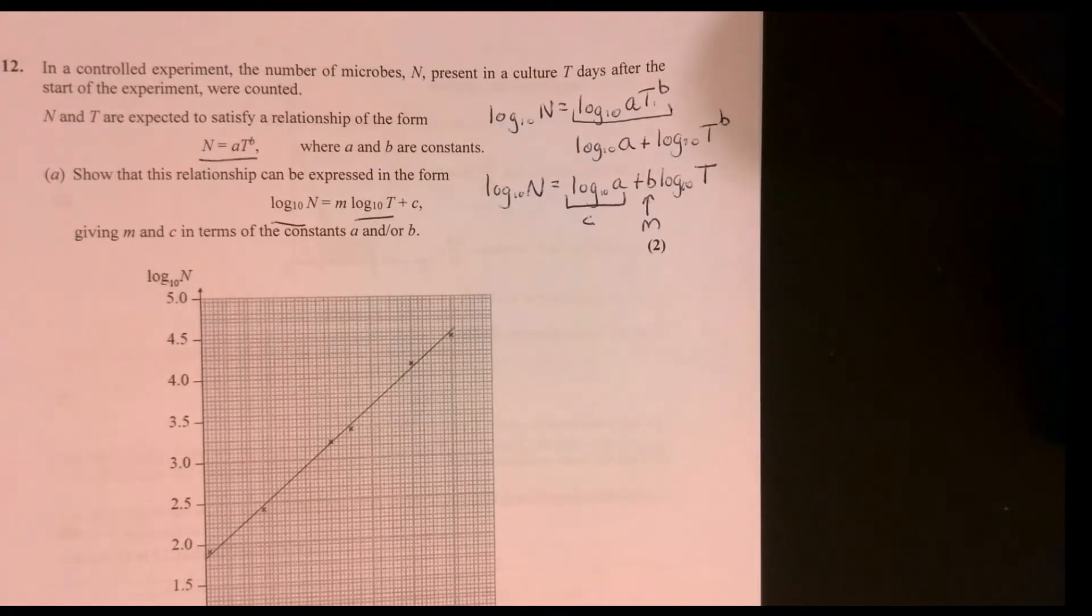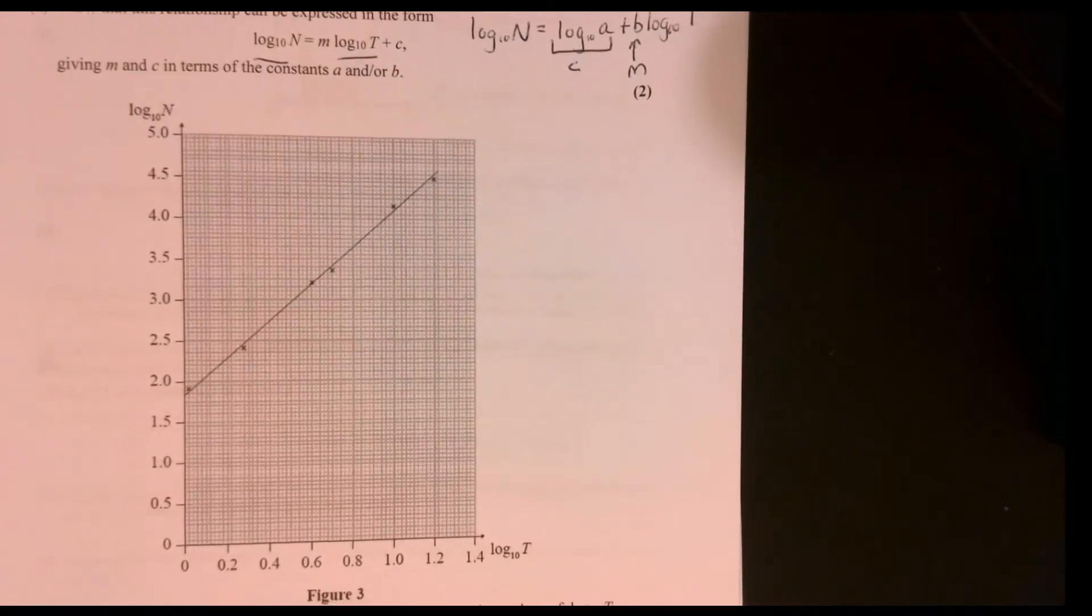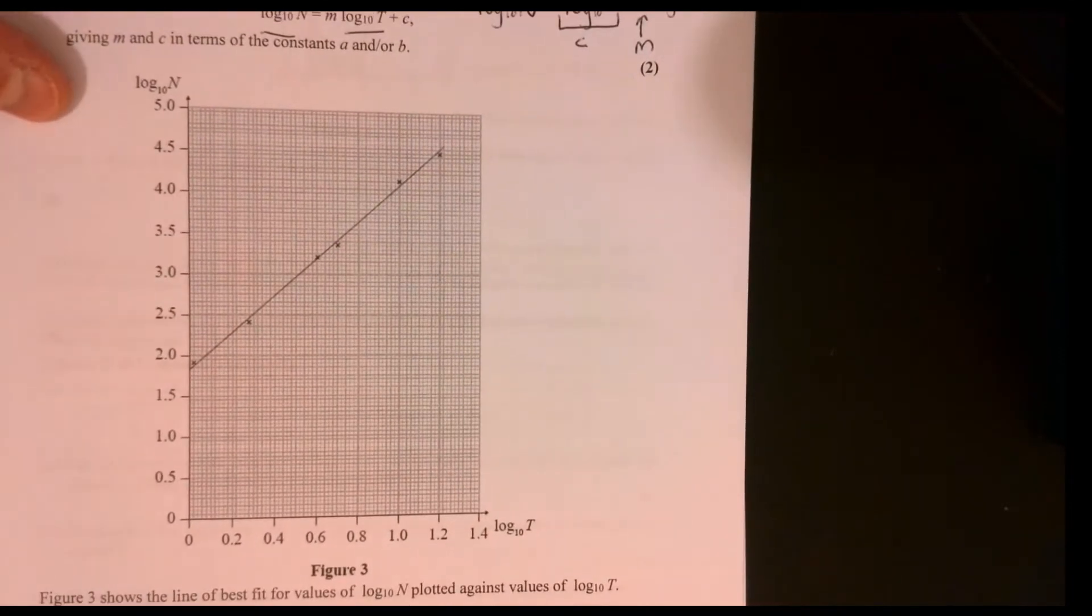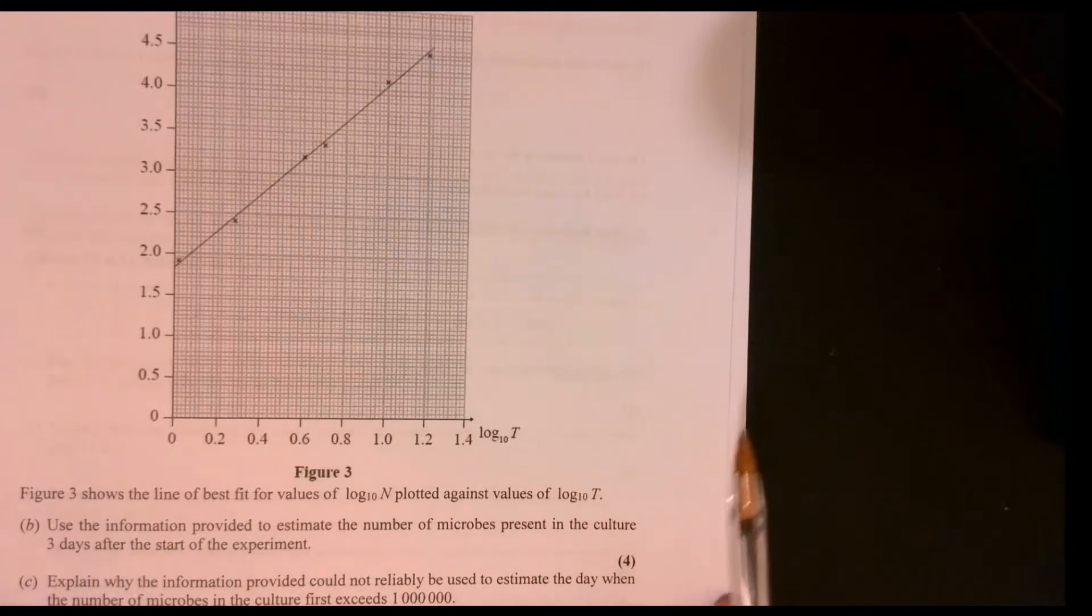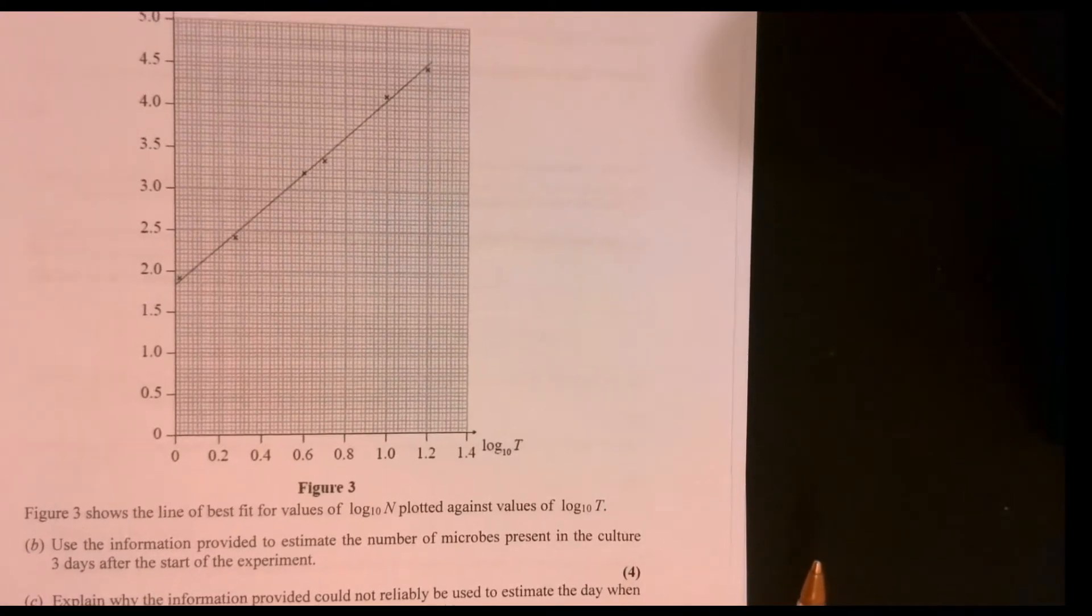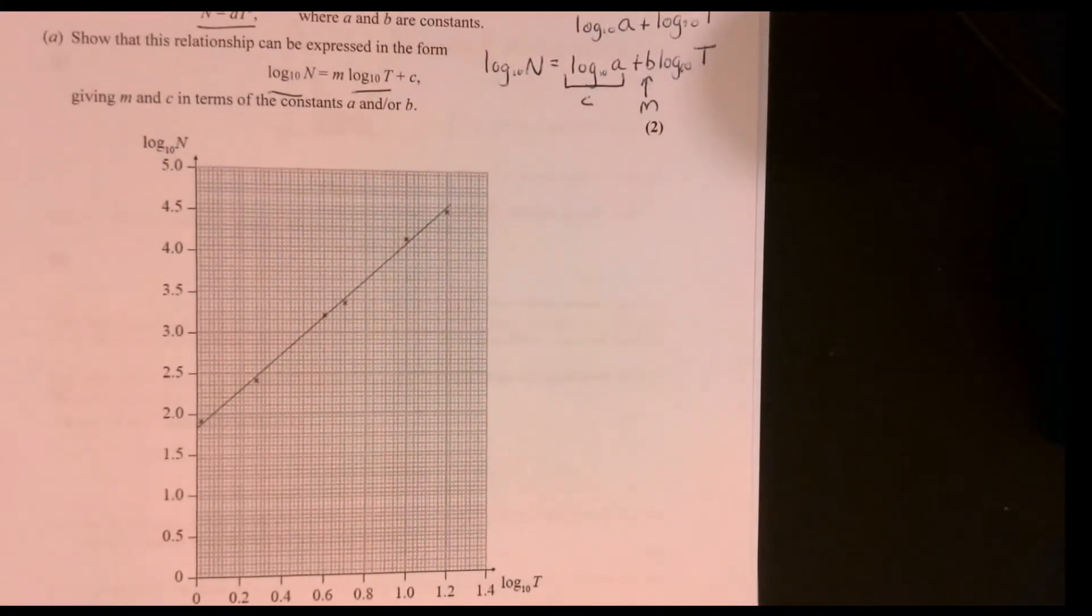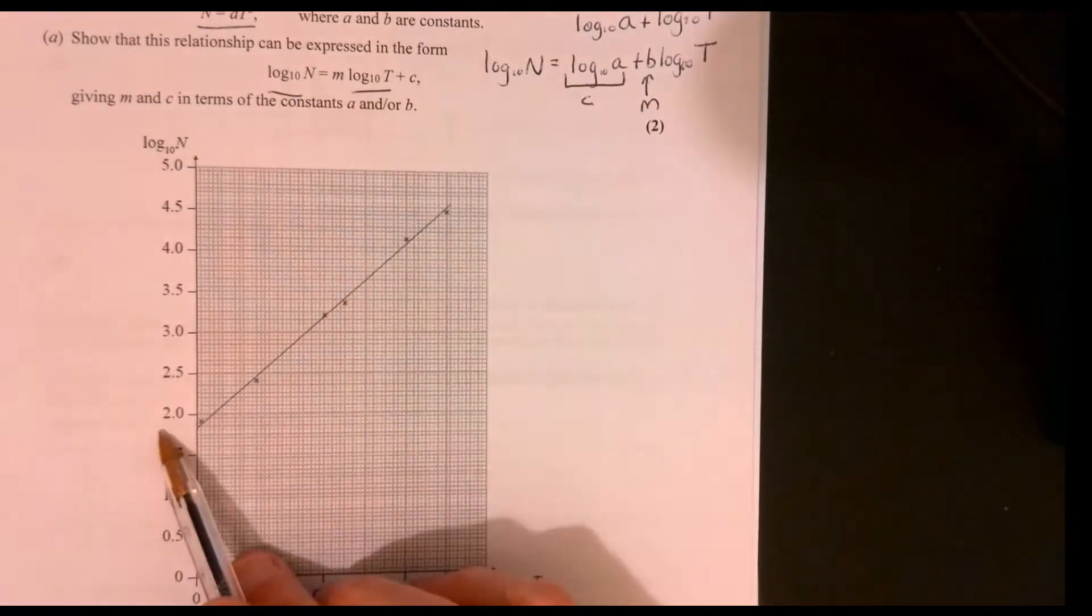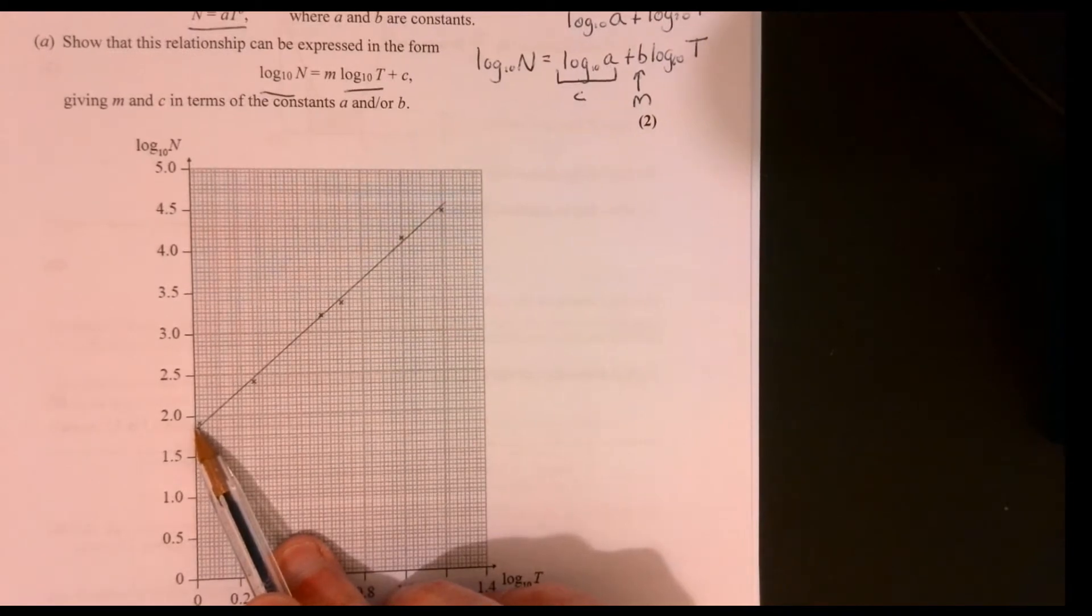Looking at part B. Let's just move this up so we can see a little bit more on the question. It says, use the information provided to estimate the number of microbes present in the culture three days after the start of the experiment. What we need to do is work out what this M value is. Remember, this is just like a linear function. I need to work out the gradient of this.